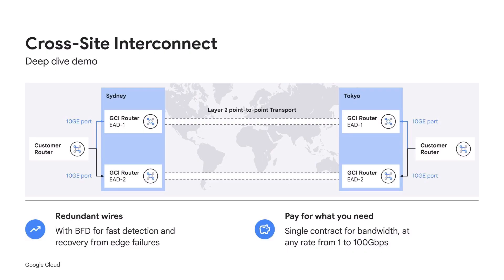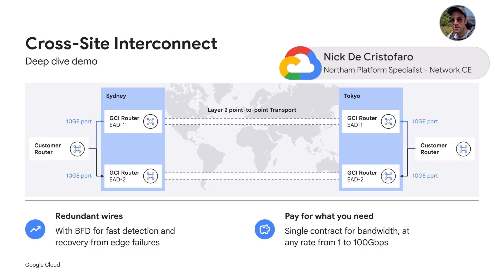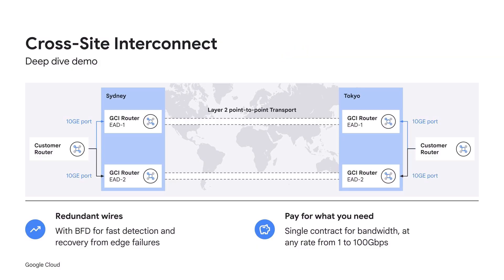Thank you, Jeremy. Let's walk through a typical deployment scenario. Your company is turning up a new site in Sydney, Australia, and you need connectivity back to your hub in Tokyo. You only need one gig at first, but you expect to grow that over time over the next six months as the site comes online. You start by deploying a pair of Cross-Site Interconnect ports at the new site in Sydney, and also at the Tokyo hub if you don't already have ports there. While the backbone is automatically protected, redundant ports are necessary to maintain connectivity during edge router maintenance. Cross-Site Interconnect's port mode supports automatic forwarding of port-down events to the remote end of the wire. Configuring BFD is still a best practice for fast reaction to brownout faults that can occur between your router and ours.